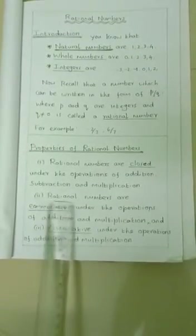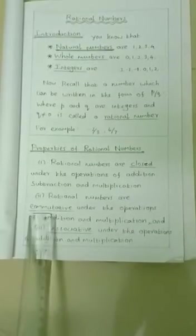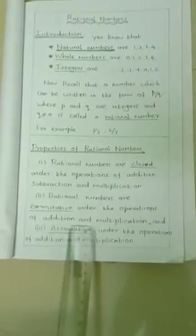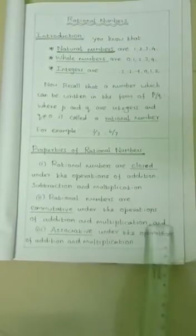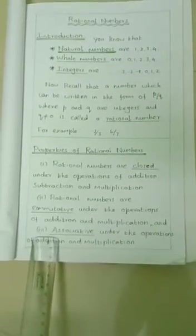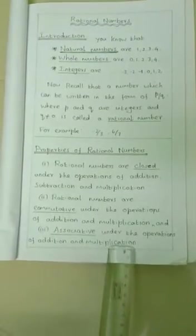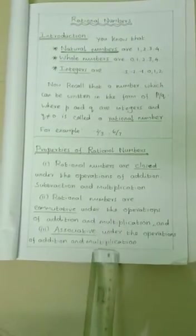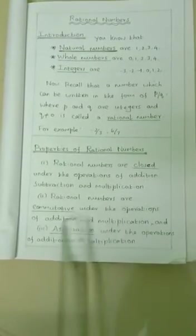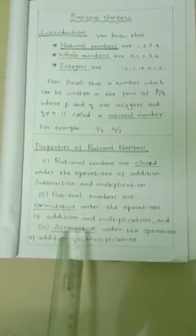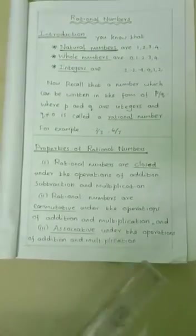The next property: rational numbers are commutative under the operations of addition and multiplication. And third property: associative under the operations of addition and multiplication. From these two properties, the operations addition and multiplication are commutative and associative for rational numbers.